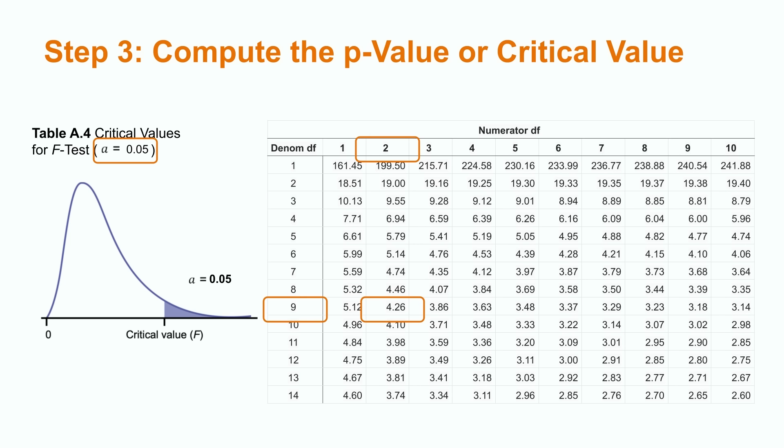Using 9 as our denominator degrees of freedom and 2 as our numerator degrees of freedom, we obtain a critical value of 4.26, the same value as our Excel output.